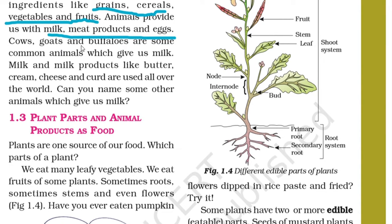Cows, goats, and buffaloes are some common animals which give us milk. Milk and milk products like butter, cream, cheese, and curd are consumed all over the world. All these are milk products and milk is obtained from animals.